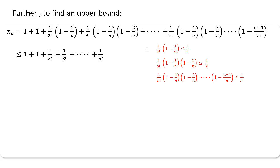Therefore, we have written this inequality. Moving further, the less-than-or-equal-to becomes strictly less than because 1/2! < 1/2, 1/3! < 1/2², and in general 1/n! < 1/2^(n−1). So we have written this strict inequality.